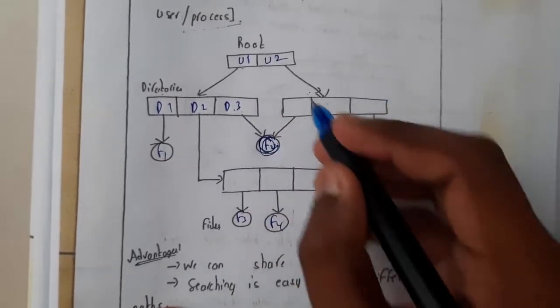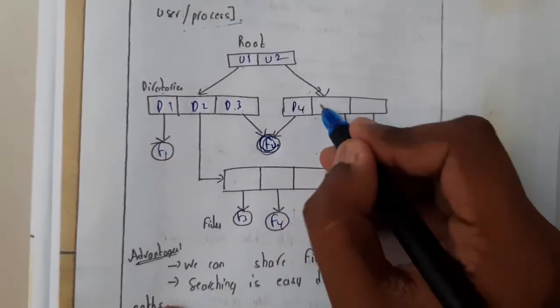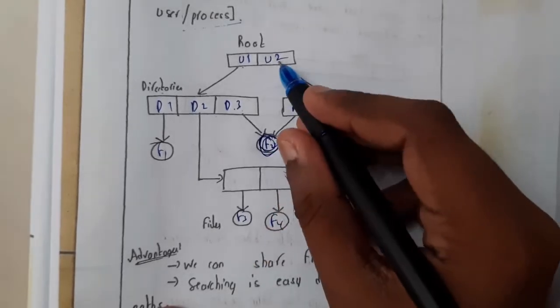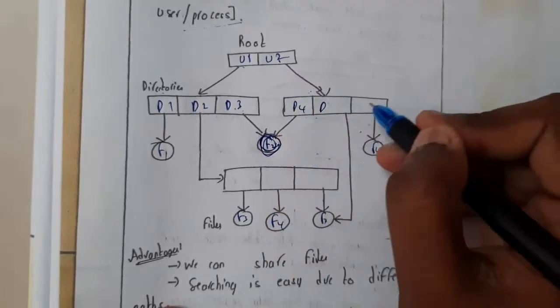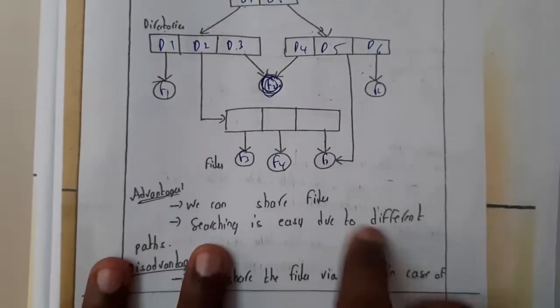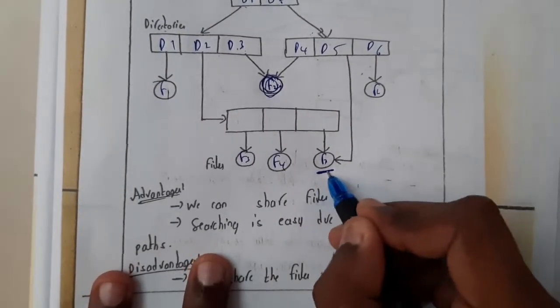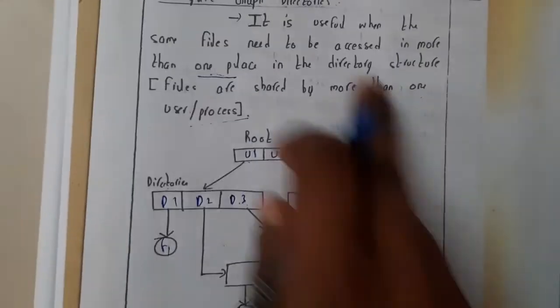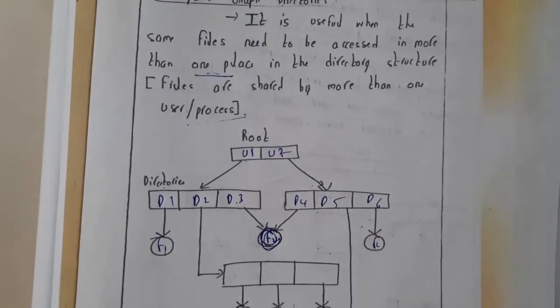From D3, he can come to F2. This is shared because user two can come from D4 to F2. That file is common between both the users, so both of them can use it. Even here, we are having one more file. This started with sharing.